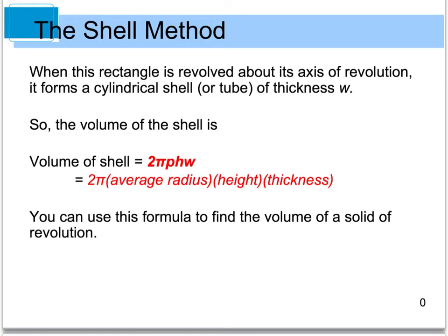Therefore, the volume of this shell is going to be equal to 2π times p times h times w. Or breaking it down: 2π times our average radius p, times the height h, times our thickness w. And this is what we're going to use to find the volume of a solid using the shell method.